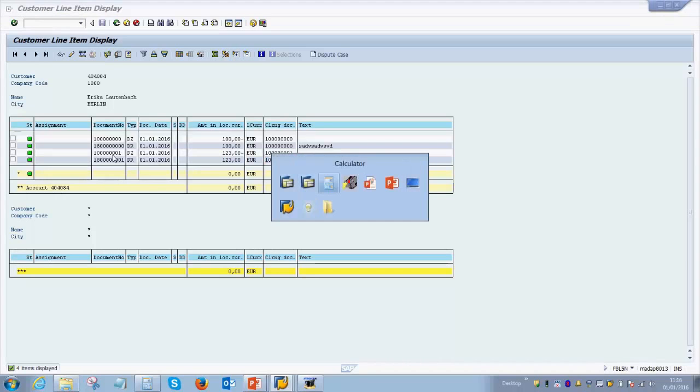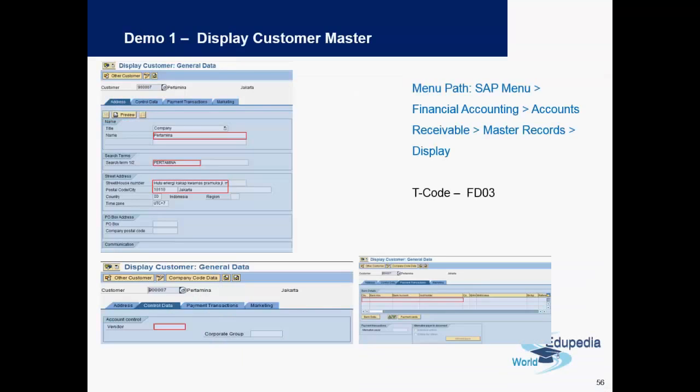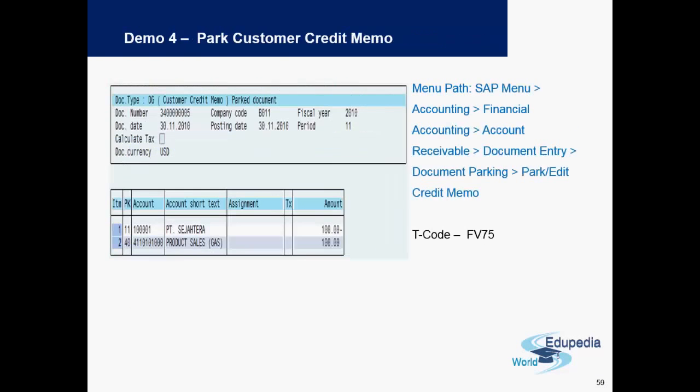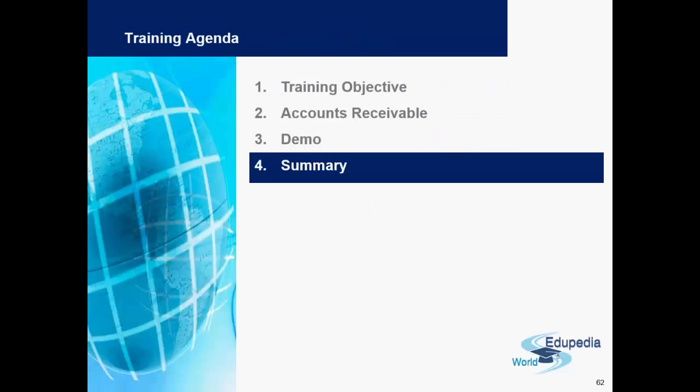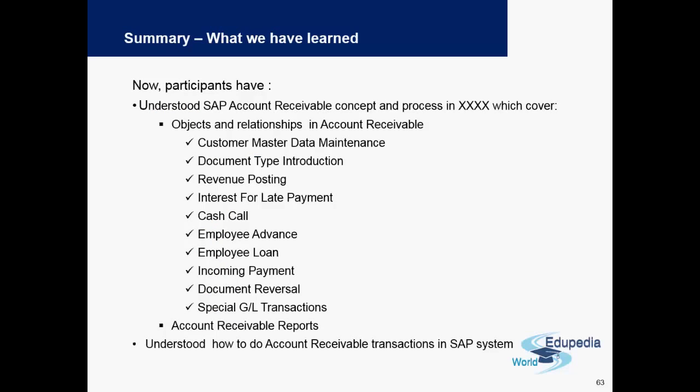Going back to the presentation, we have now covered all these transactions: parking an invoice and posting the invoice, viewing the line items with FBL5N, and the incoming payments. As a summary, we have covered master data maintenance, documents and different document types, the revenue posting which is the invoice posting, how incoming payments look like, how special GL transactions work, and how the line item report looks like for the customer.